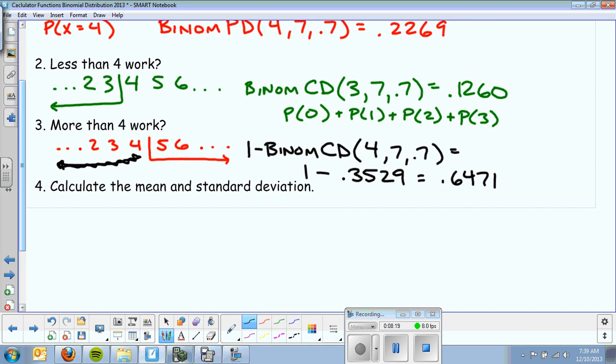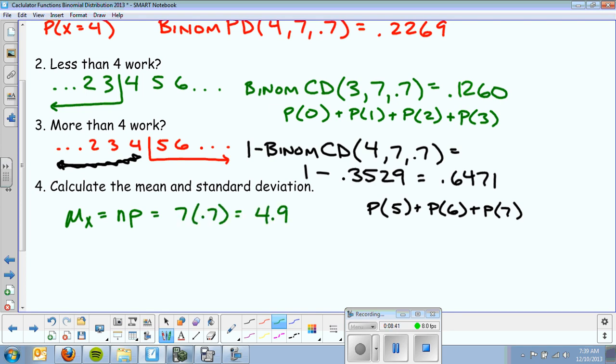And again, that's essentially getting me the probability of 5 plus the probability of 6 plus the probability of 7. But instead of individually calculating those, I can do it much faster. Now the easy part is to calculate the mean and standard deviation. The mean is NP, which is out of 7 families, 70%. Multiply those, I get 4.9. And the standard deviation is the square root of NP times 1 minus P, and that gets you 1.21.